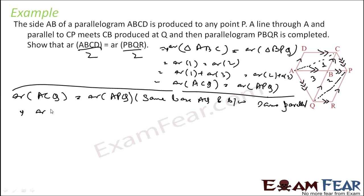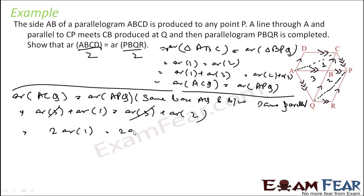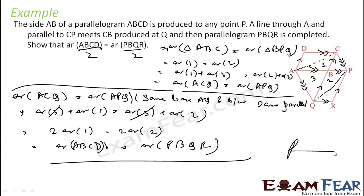Area of ACQ is what? Area of ABQ is what? Twice of area 1 is equal to twice of area 2. And twice of area 1 is area AB, and twice of area 2 is area B1. You just have to draw this diagram and then visualize how to solve. It is not very difficult to understand. You can spend some time to understand how to solve.